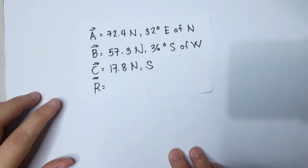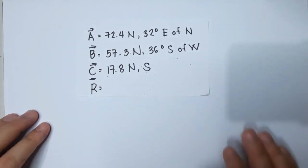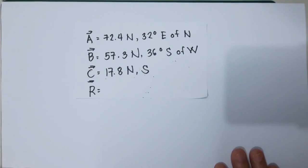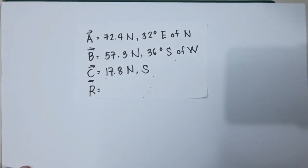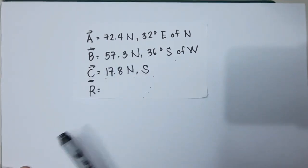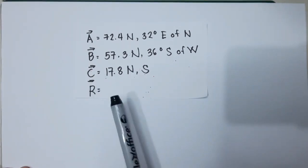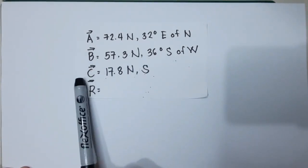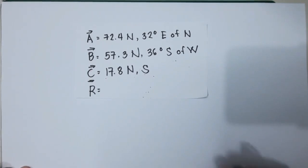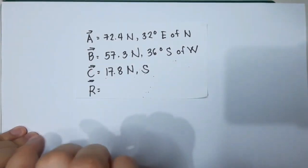Good day everyone. We will now solve another example using the cosine law and the sine law method. In this case we will add vector A plus vector C, and find the resultant vector using the sine law and cosine law method, and also vector B plus vector C. Let's start with vector A plus C.